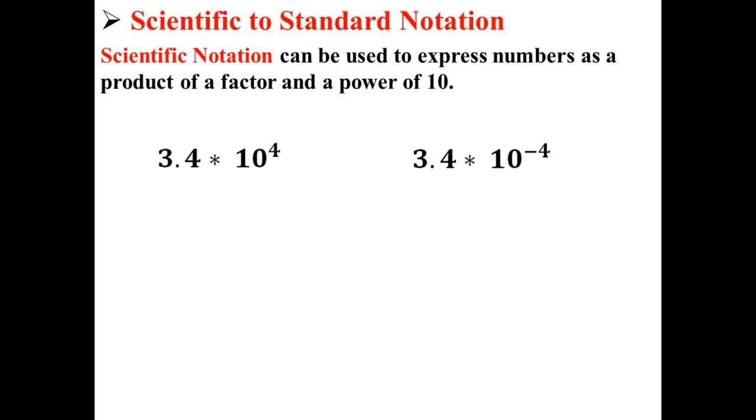Here we have two numbers written in scientific notation: 3.4 times 10 to the fourth and 3.4 times 10 to the negative fourth. Currently these are in scientific notation. Let's try converting them to standard notation.